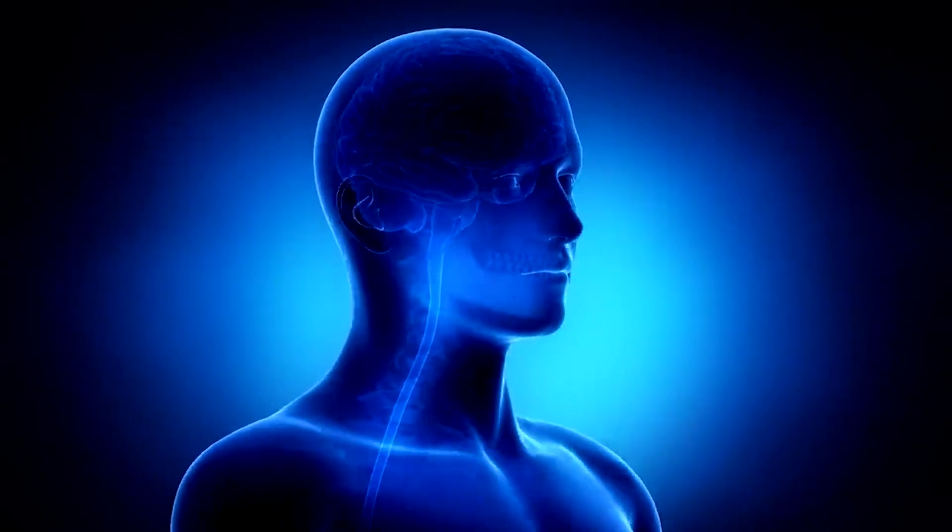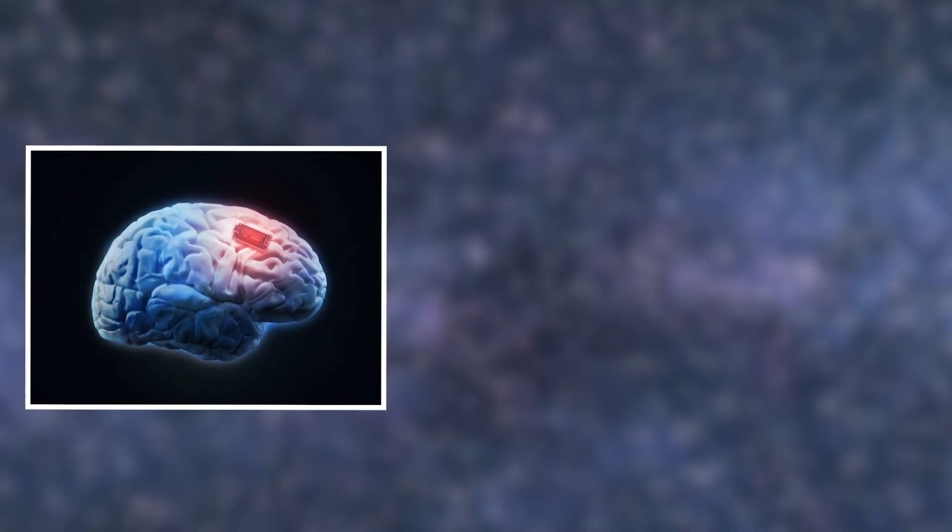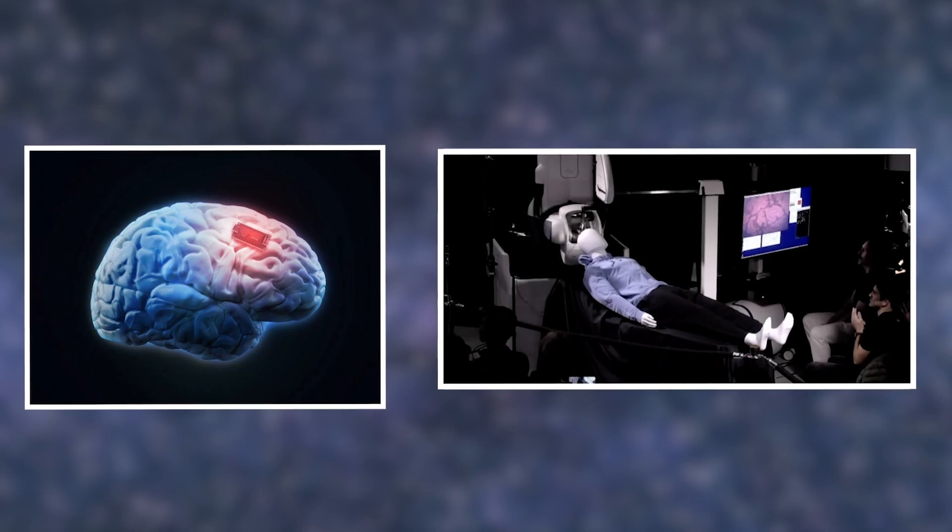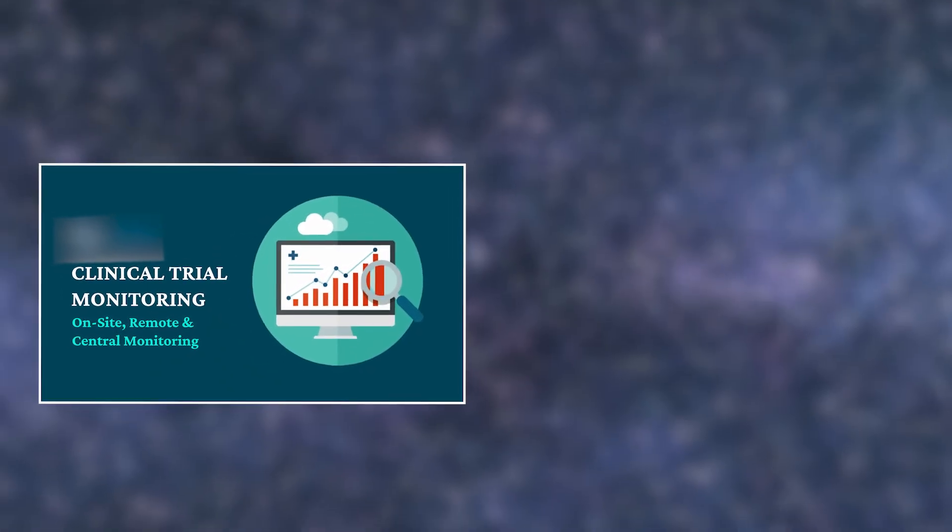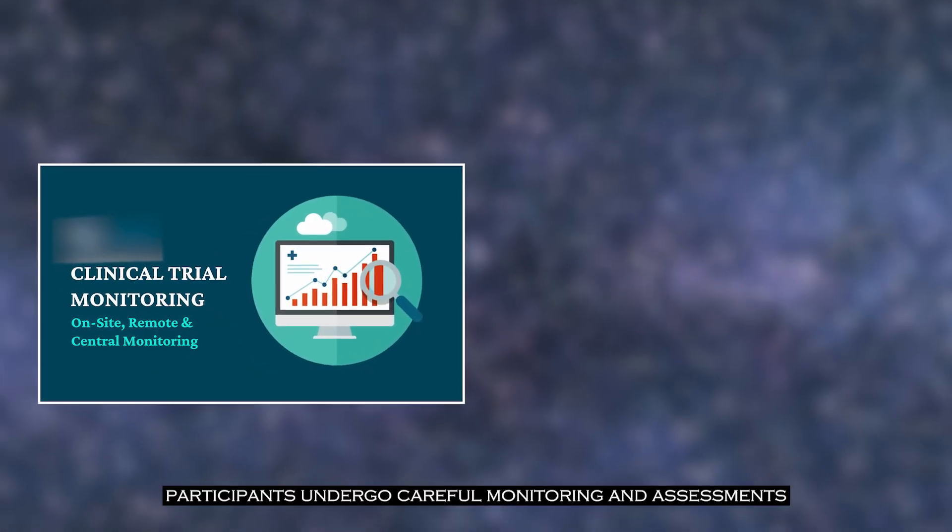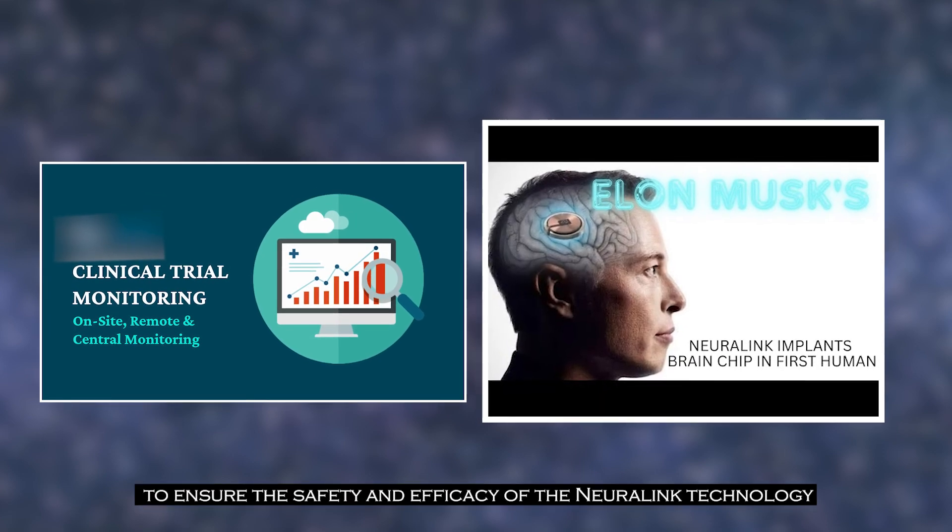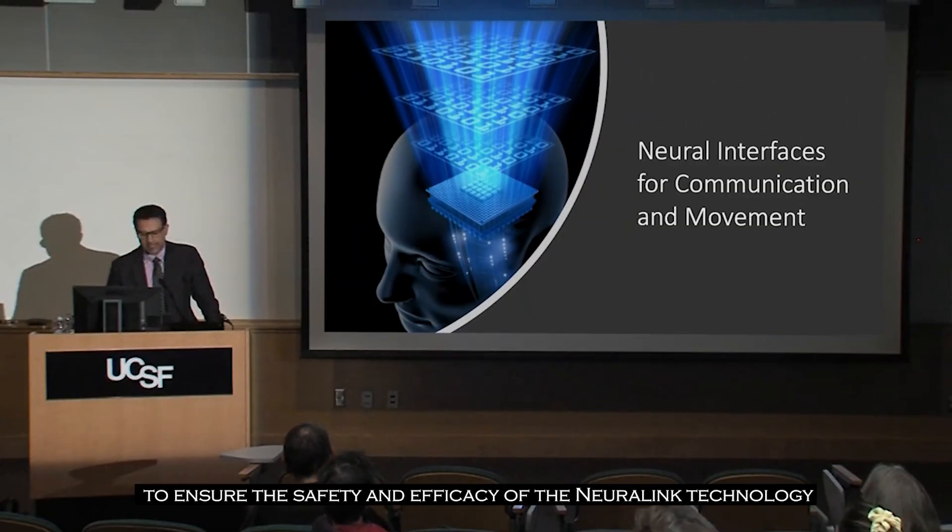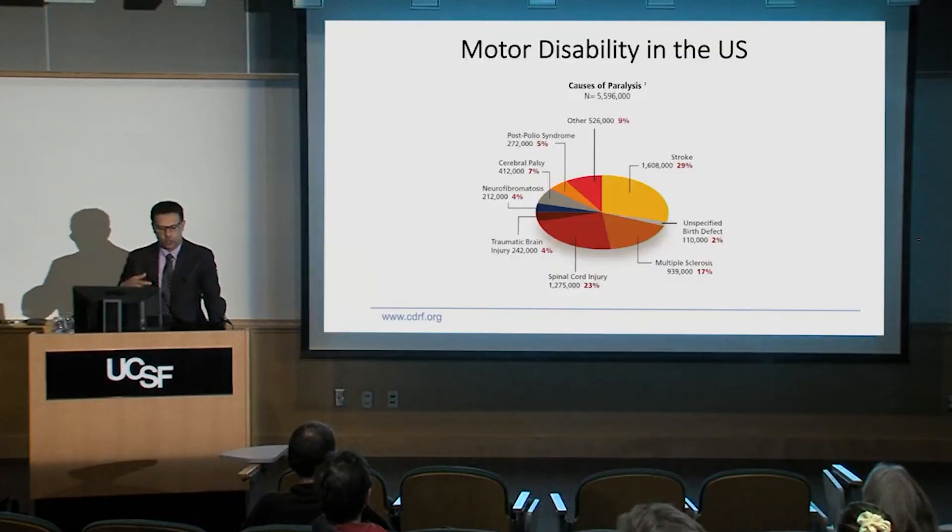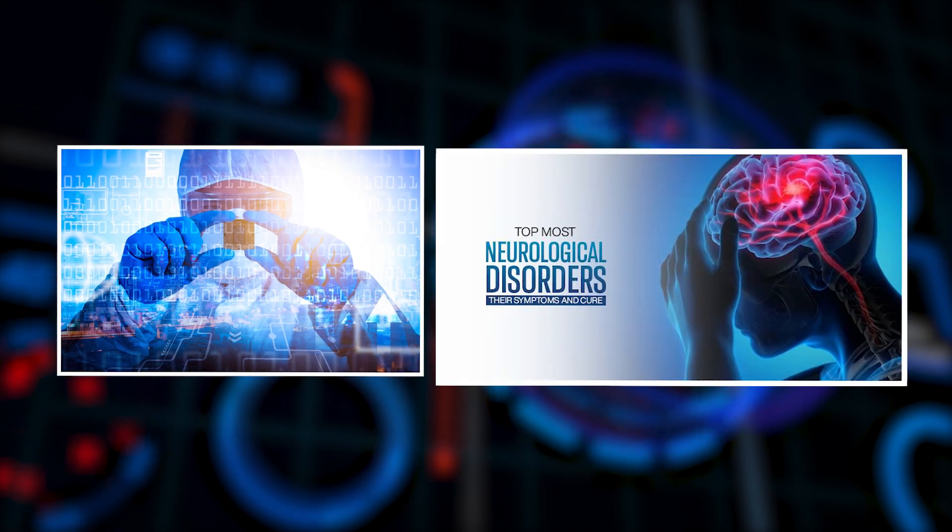The trials involve a select group of participants, each volunteering to have Neuralink's brain implant, known as the Link, placed within their brains. During the trials, participants undergo careful monitoring and assessment to ensure the safety and efficacy of the Neuralink's technology. The focus is primarily on the restoration of motor function in individuals with paralysis, with potential applications extending to various neurological conditions.